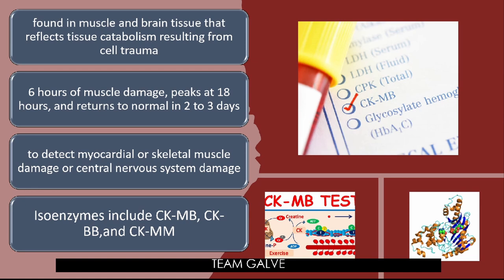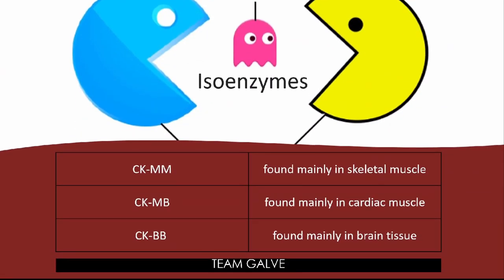CK-MM is found mainly in skeletal muscle — if there's an increase of CK-MM in bloodwork, you can rule out skeletal muscle damage. CK-MB found mainly in cardiac muscle — when the level is high, that indicates cardiac muscle damage. CK-BB is found in brain tissue — when CK-BB is elevated, the patient is probably having brain tissue damage.